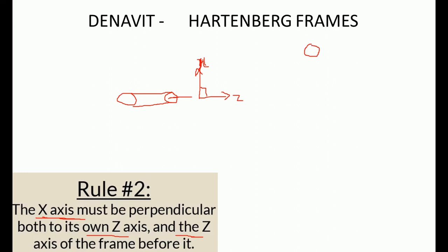If a motor is placed with the shaft pointing outward and upward, the Z axis must follow that direction. However, we cannot create the X axis parallel to the previous X axis. So in this case, we can create the X axis going inside the screen so that it is perpendicular to the current Z axis and also perpendicular to the previous Z axis.